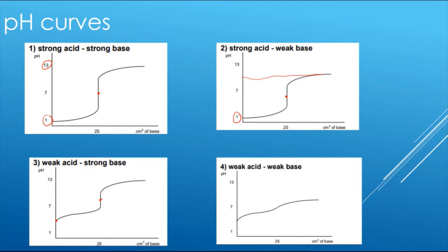Finally, for weak acid and weak base — a weak base being added to a weak acid — we start around pH 3 to 4. Because it's a weak base, we finish off at a still relatively low pH, just above 7 to around 8 or 9. The neutralization would occur around pH 7.